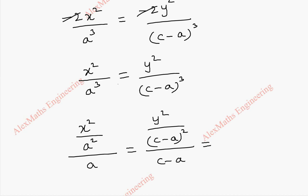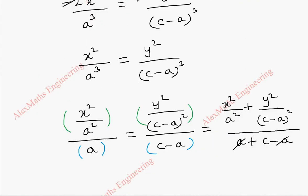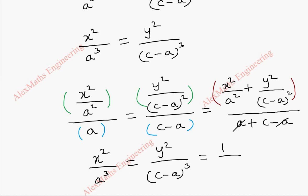Using the ratio property, we can add the numerators and write a new ratio: [x²/a² + y²/(c−a)²] / [a + (c−a)]. We can cancel a and c−a in the denominator to get c, and since x²/a² + y²/(c−a)² = 1, the added numerator equals 1. So we can rewrite: x²/a³ = y²/(c−a)³ = 1/c.